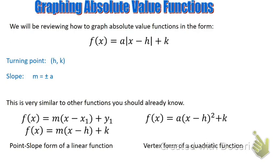Just keep in mind: we find that turning point — the h, k value — that's where we're going to start the graph. Then on one side we use the positive slope of a, and on the other side we use the negative slope of a. Let's see how this works.